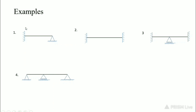First example: a beam with one side fixed and the other side hinged. Redundancy equals r minus 3. The total number of reactions in both supports is 3 (for the fixed support) plus 2 (for the hinged support) equals 5, so redundancy equals 5 minus 3 equals 2.